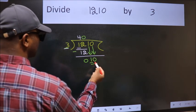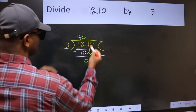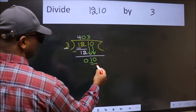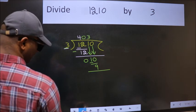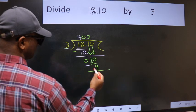So, 10. A number close to 10 in 3 table is 3 threes, 9. Now we subtract. We get 1.